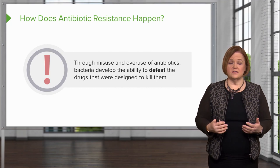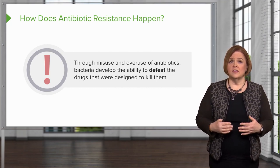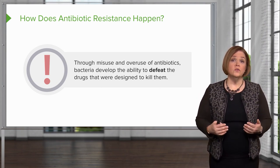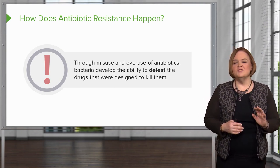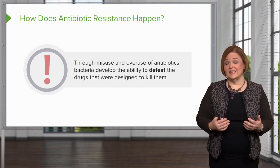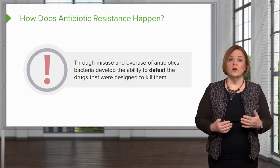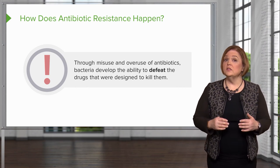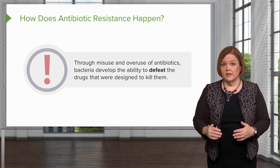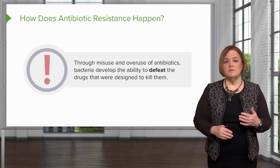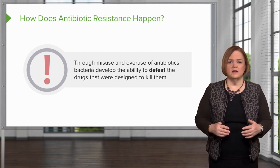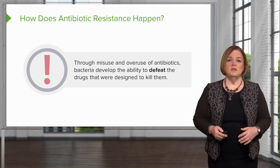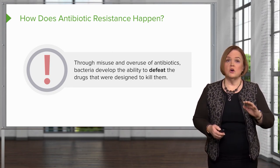Now let's talk about antibiotic resistance. That's why it is so important that we only treat bacterial infections with antibiotics — because if we misuse or overuse antibiotics, these bacteria are pretty smart. They can develop the ability to defeat the drugs we designed to kill them, and we've seen it happen over and over again. The number one reason we want to appropriately use antibiotics — only treat infections that are bacterial — is that if we treat viruses with antibiotics or overuse antibiotics, these bacteria are going to develop resistance, and the bugs will know how to defeat the drugs.